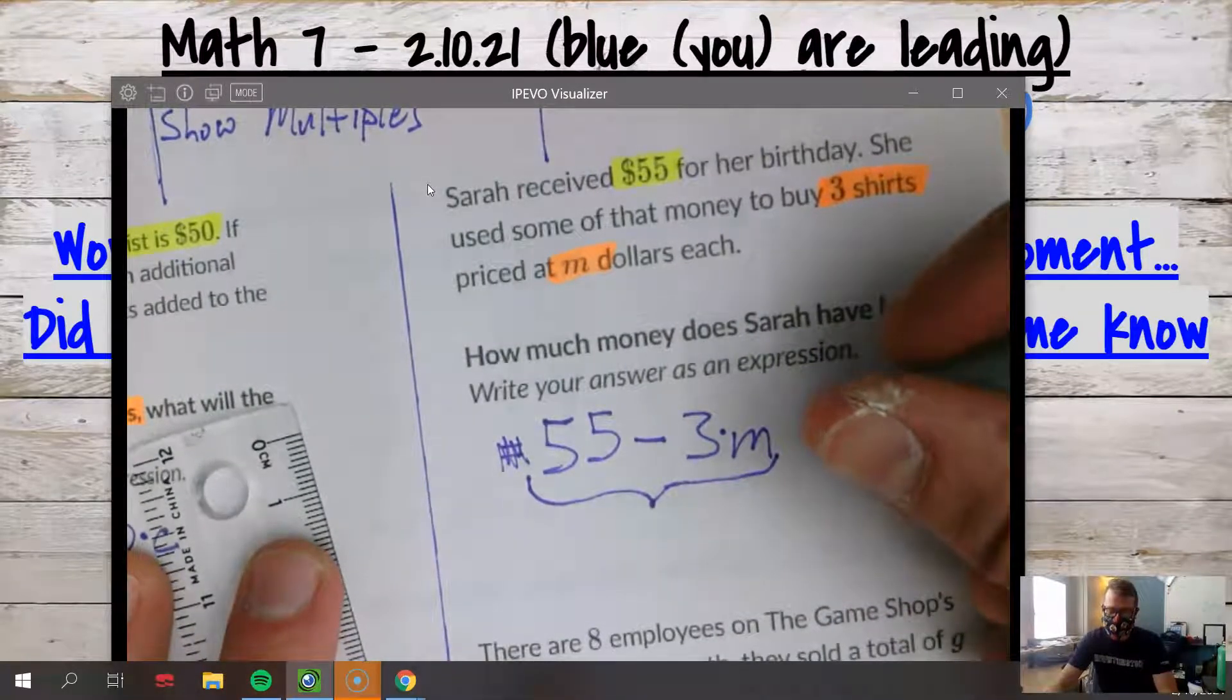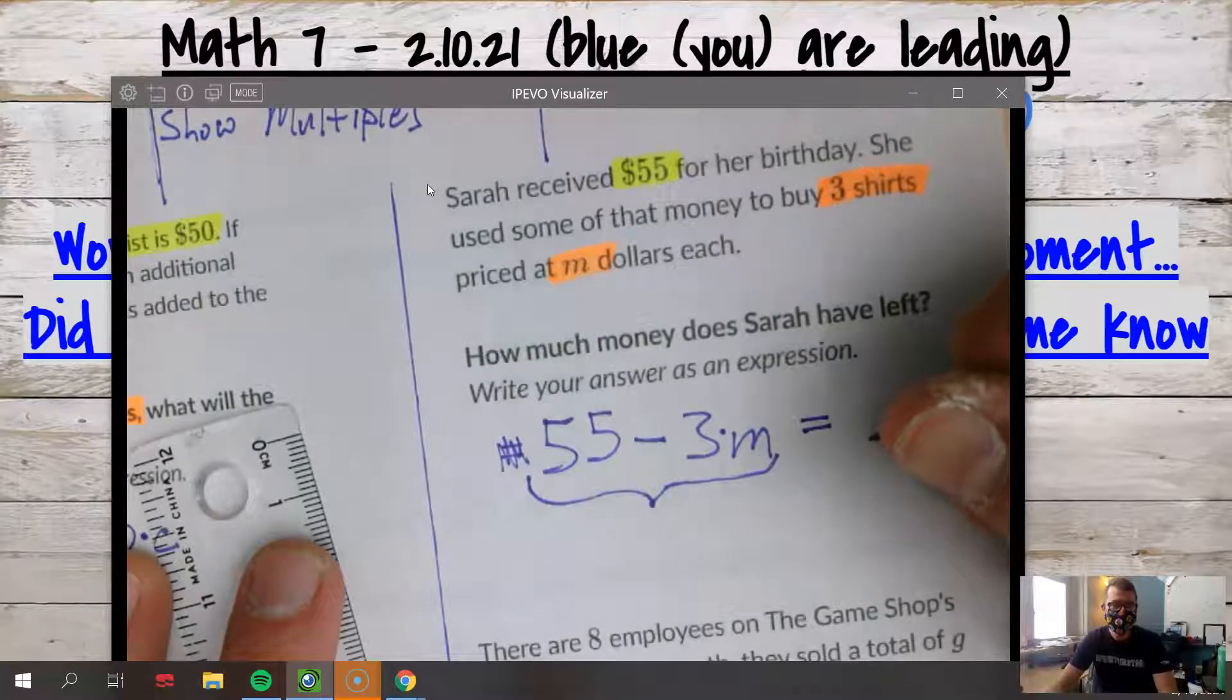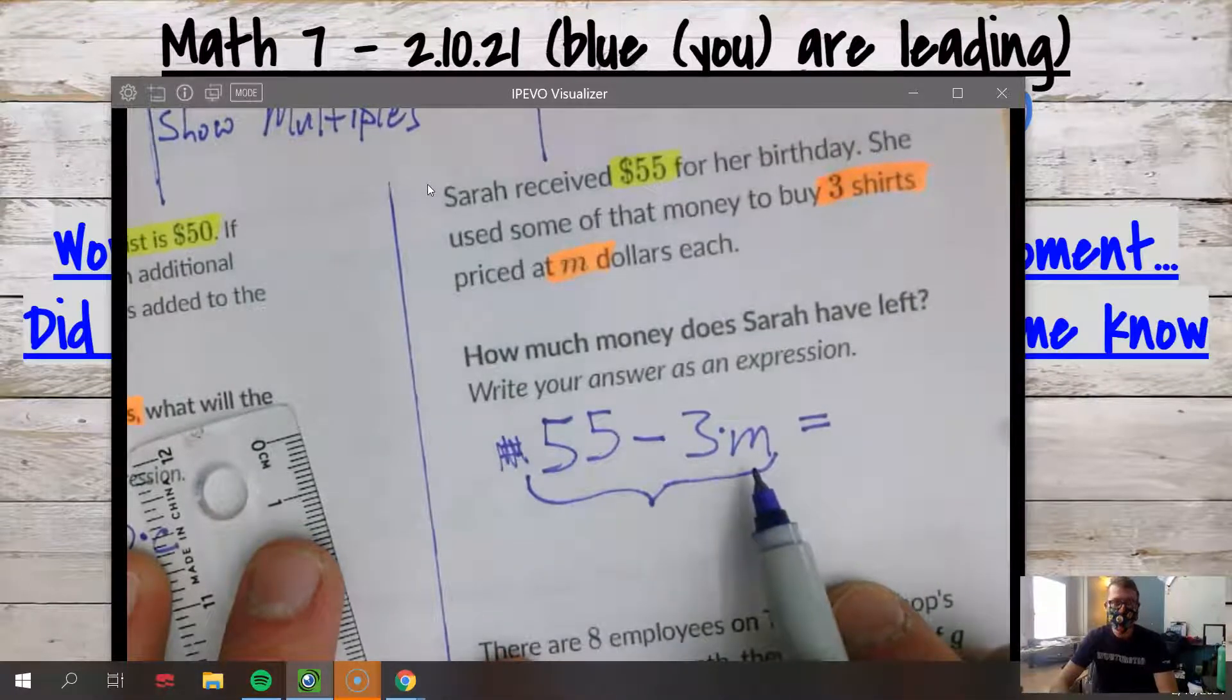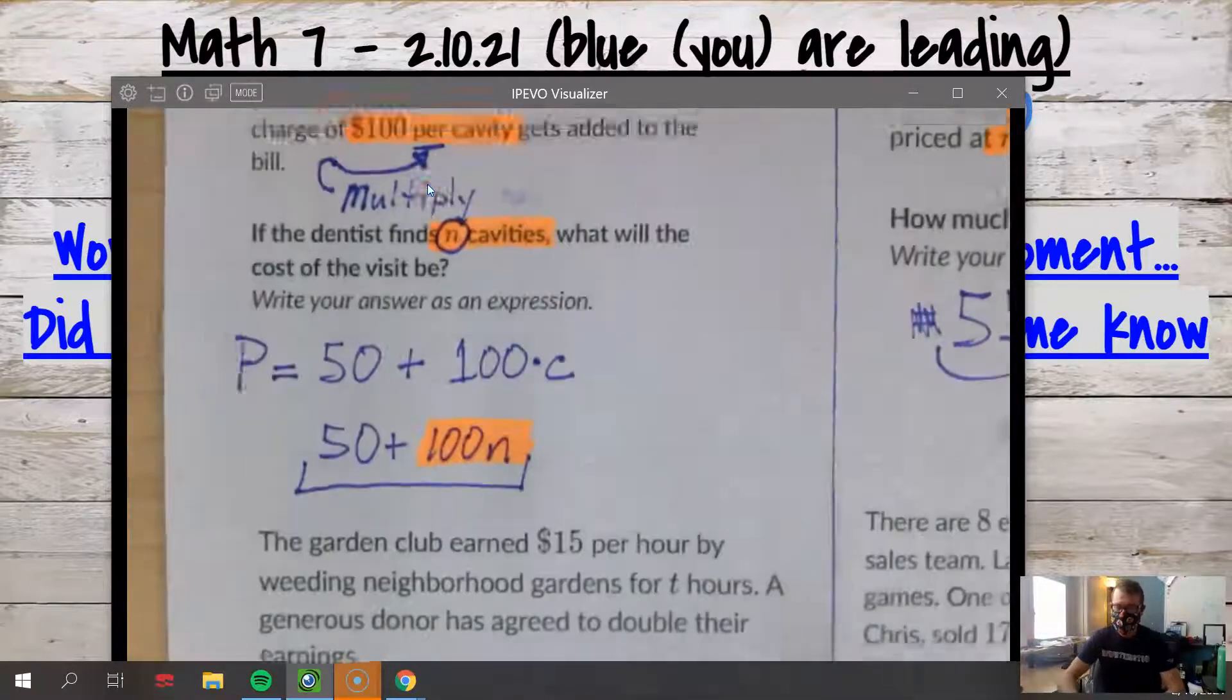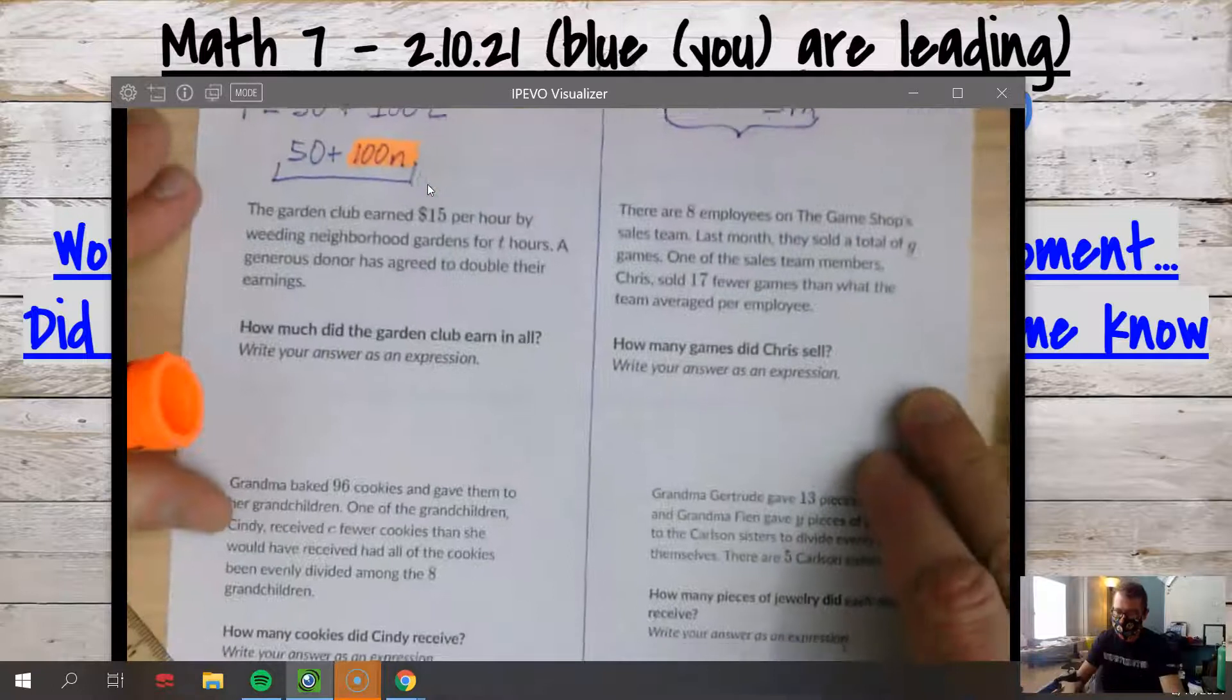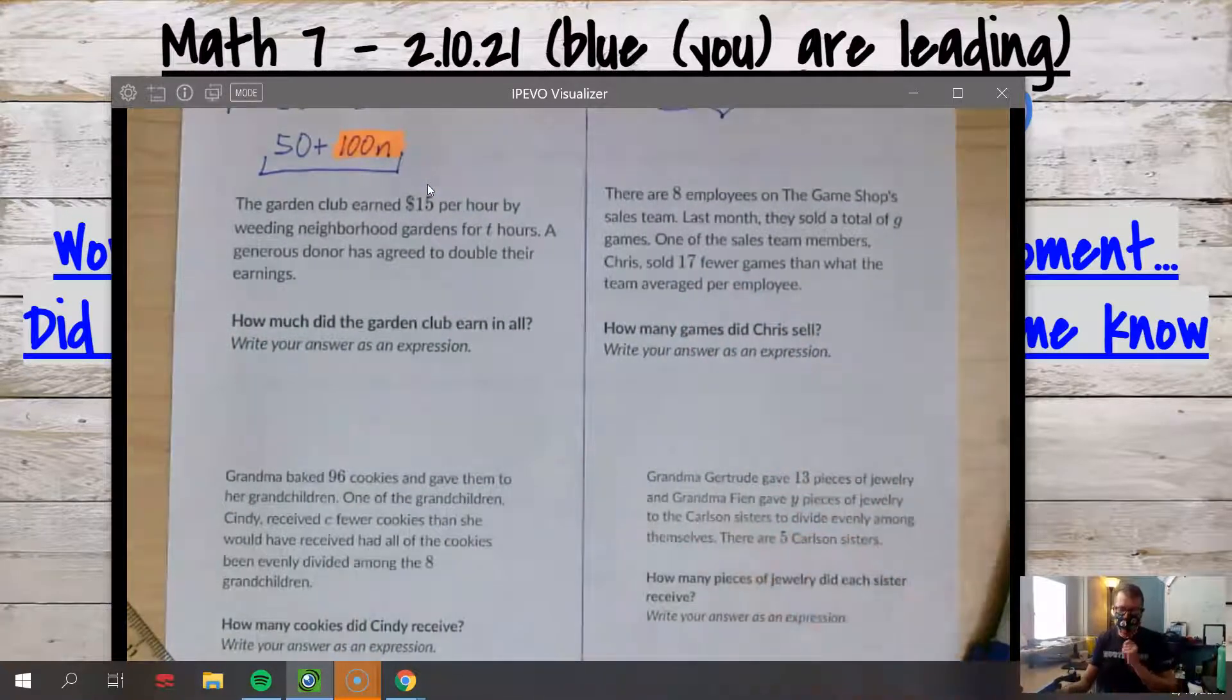So then I was gonna ask you, what do you do next? And what we do next is take away, right? We subtract, because Sarah buys something. She buys three shirts. And I don't know about you, but when I buy things, people normally want me to give away my money. So that is subtraction - we give it away. Right? So three shirts at m dollars each - that's why Isaiah said, well, it's actually minus 3 times m.